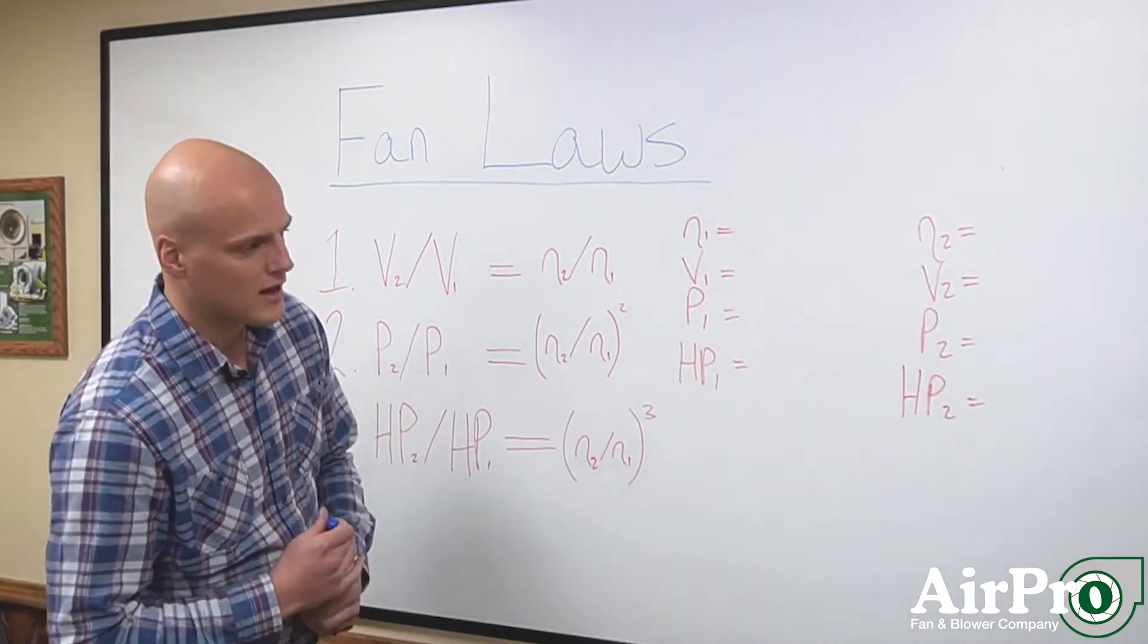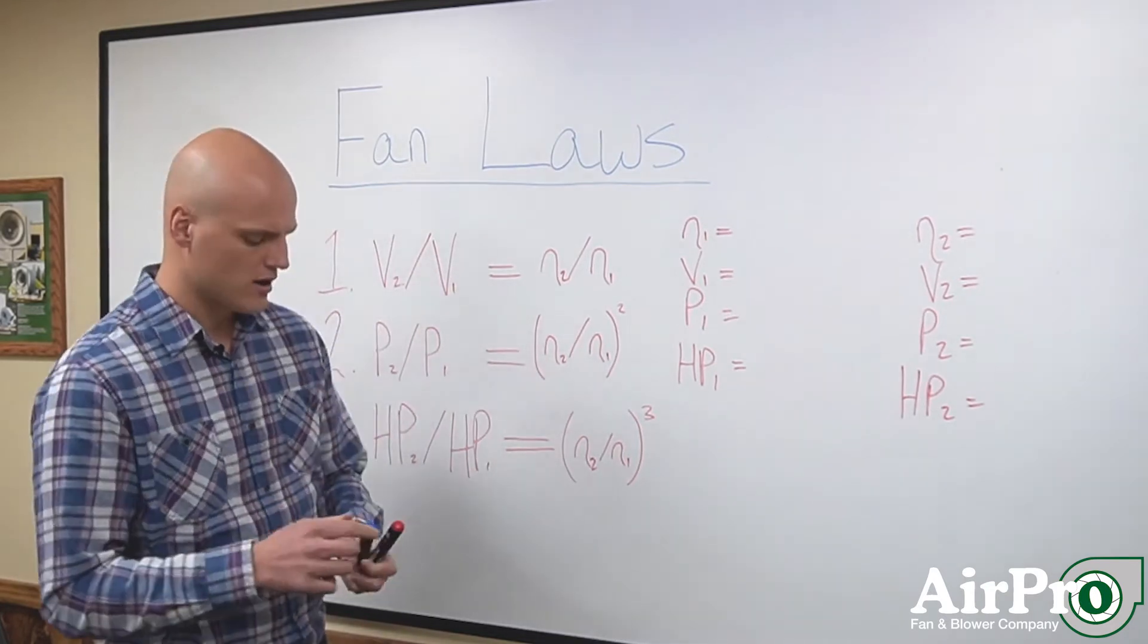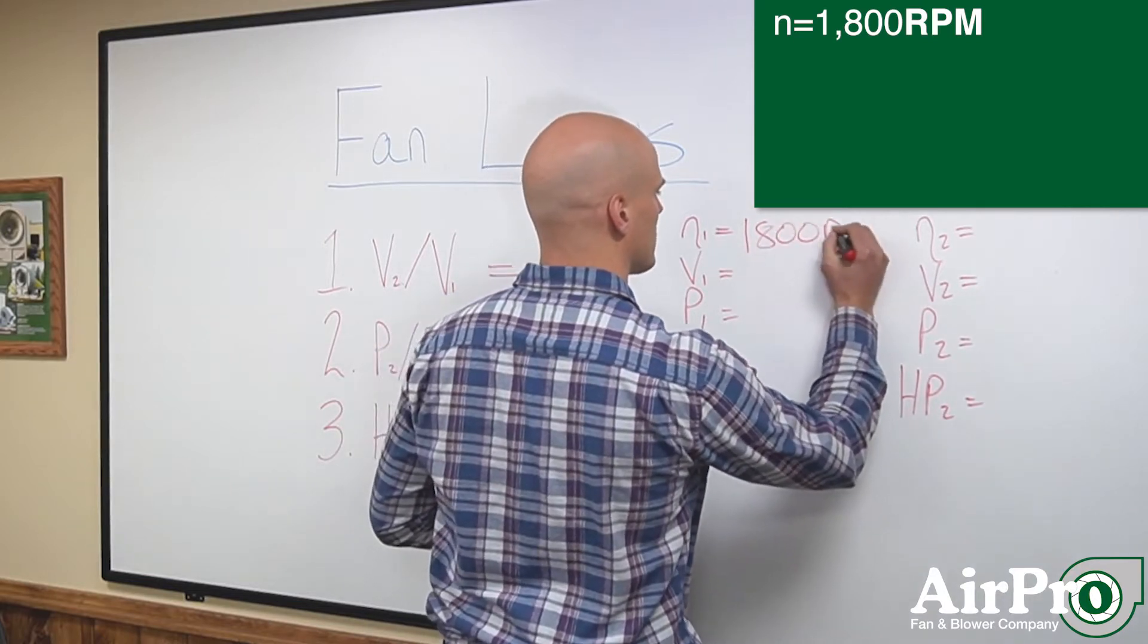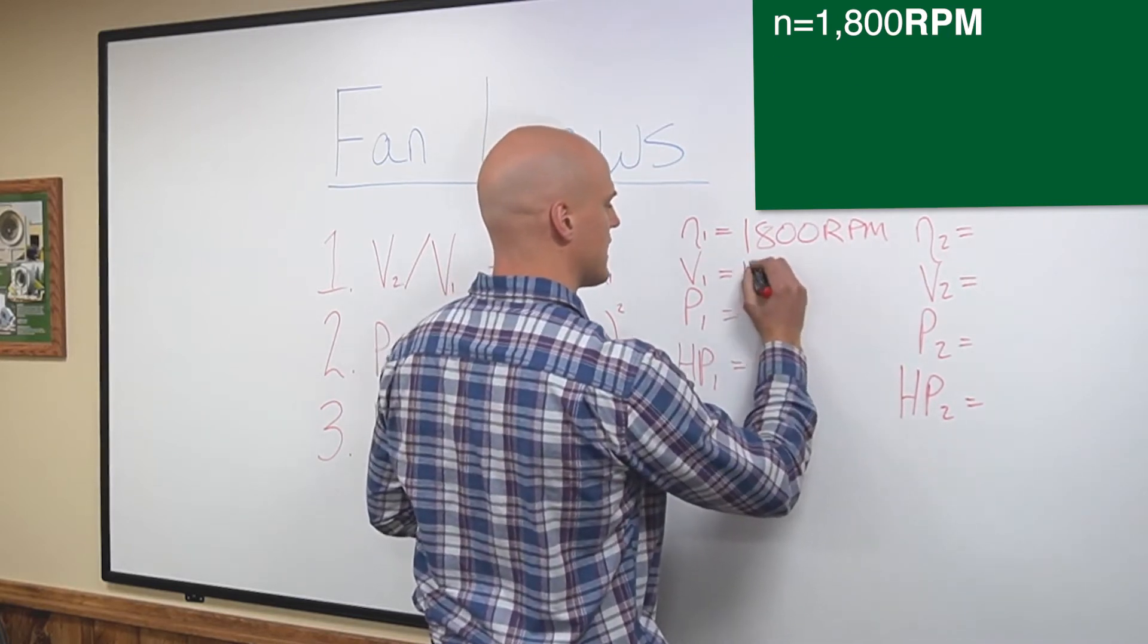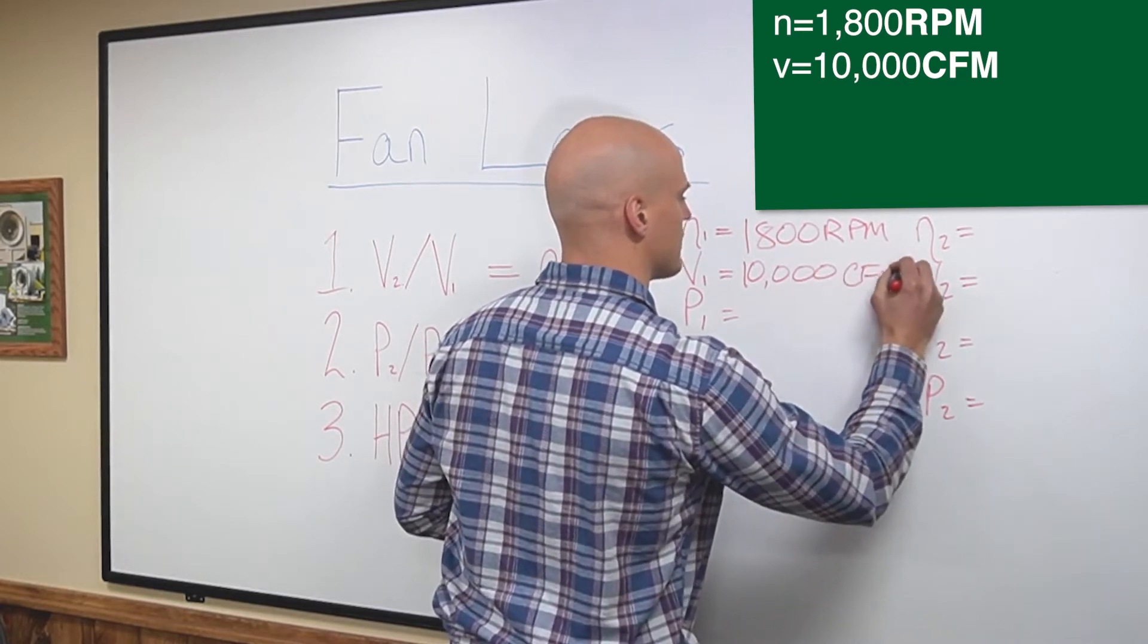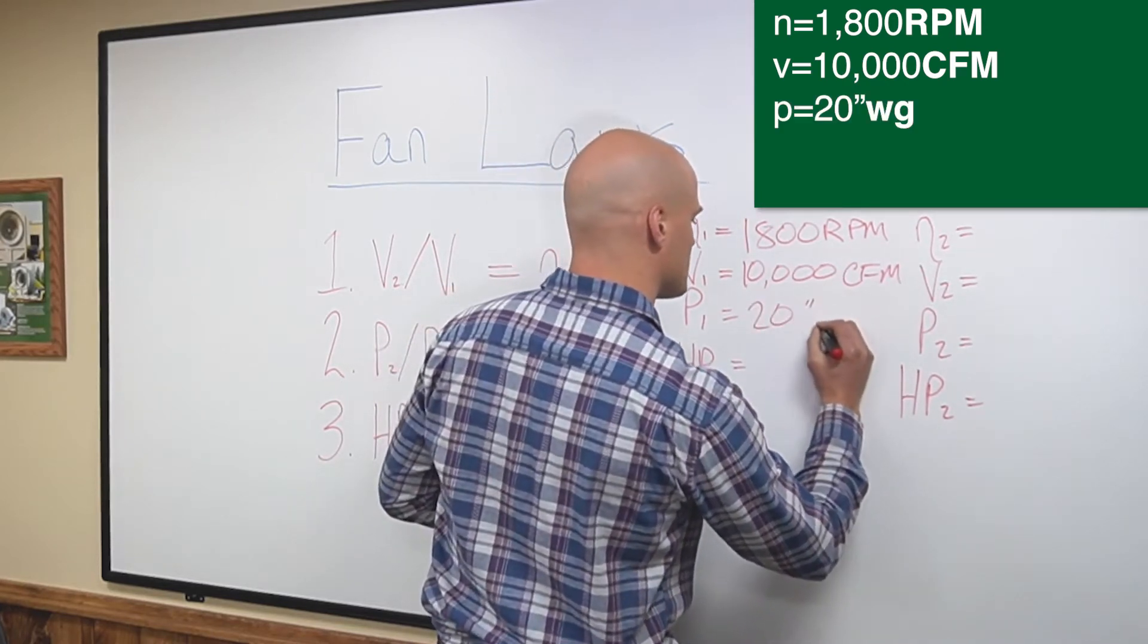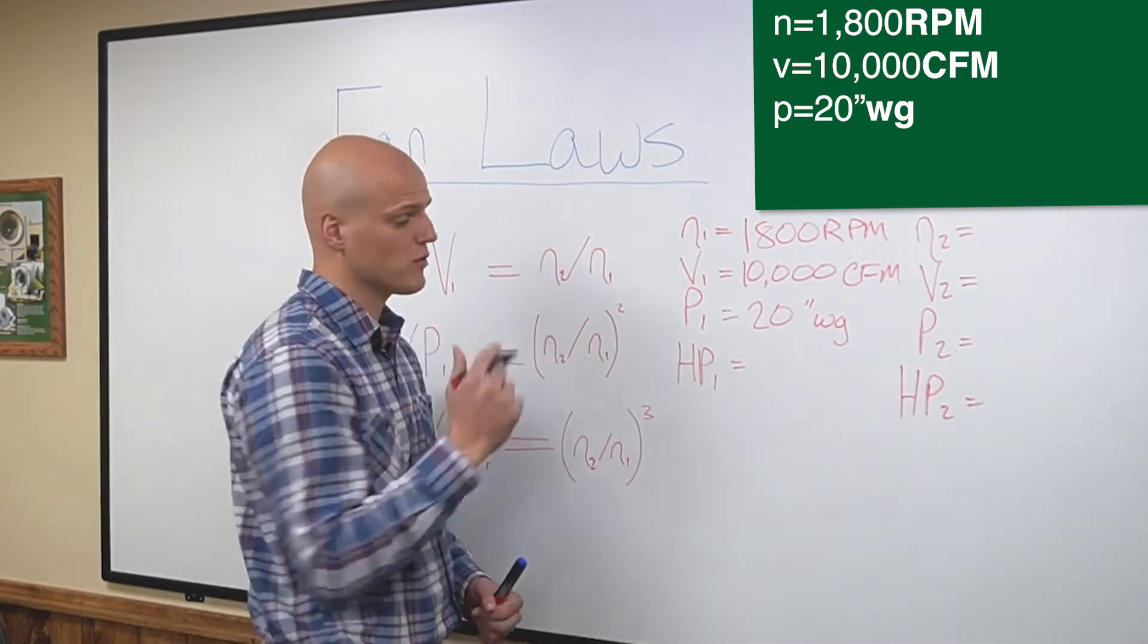Let's say you bought a fan and you knew that your operating point was going to be at 100 horsepower at 1,800 RPM. Your volume needed was 10,000 CFM, and your pressure needed was 20 inches of water. Your designed horsepower was 100 horsepower.